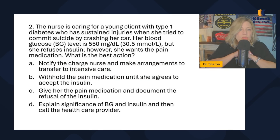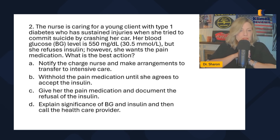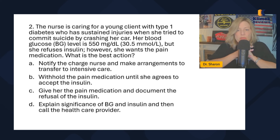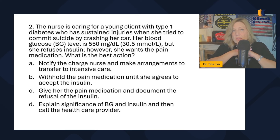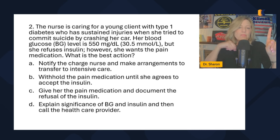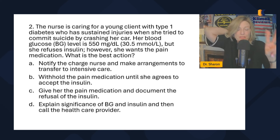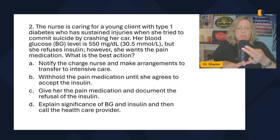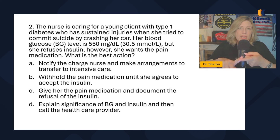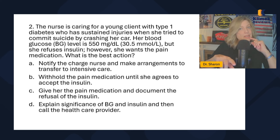Question two: the nurse is caring for a client with type one diabetes who sustained injuries when she tried to commit suicide by crashing her car. Her blood glucose level is 550, but she refuses insulin; however, she wants pain medication. What is the best action? We have one patient with multiple problems in the question. Suicide is safety — number two. Blood glucose of 550 is physiological — objective, number one. And pain is comfort — number three.